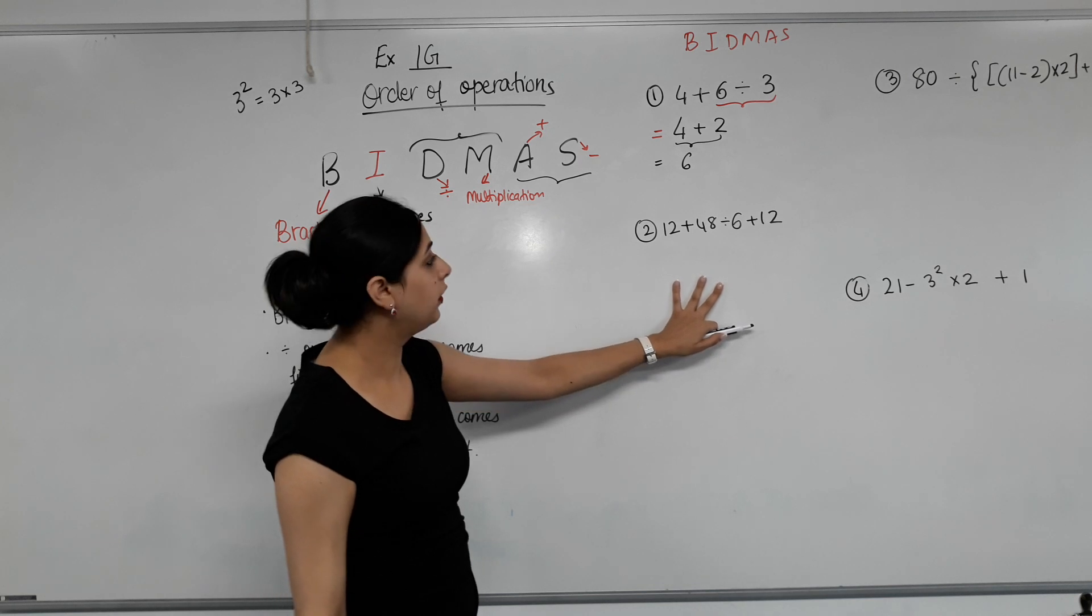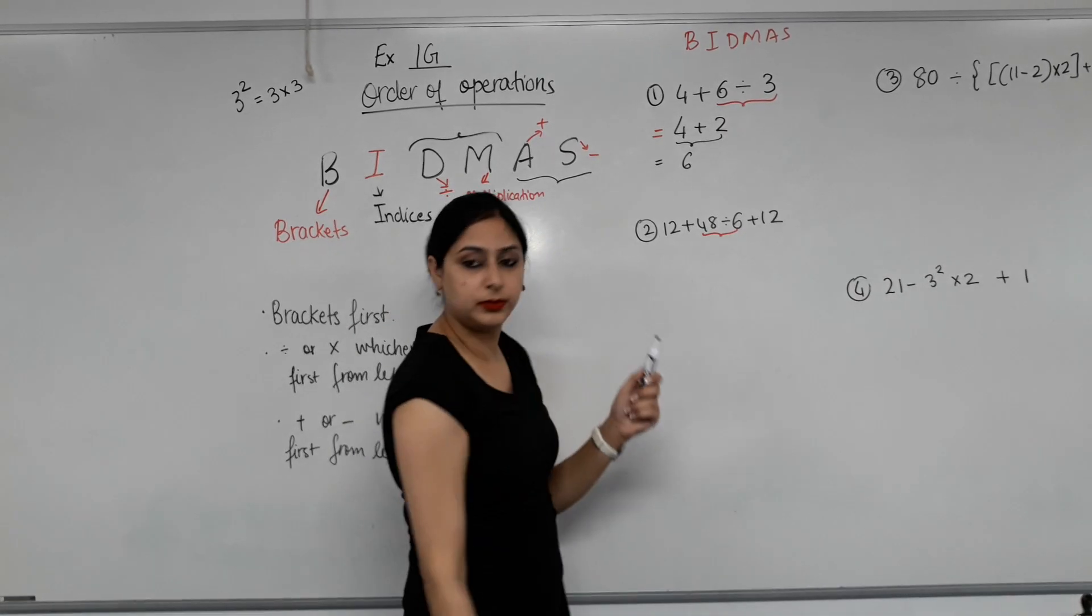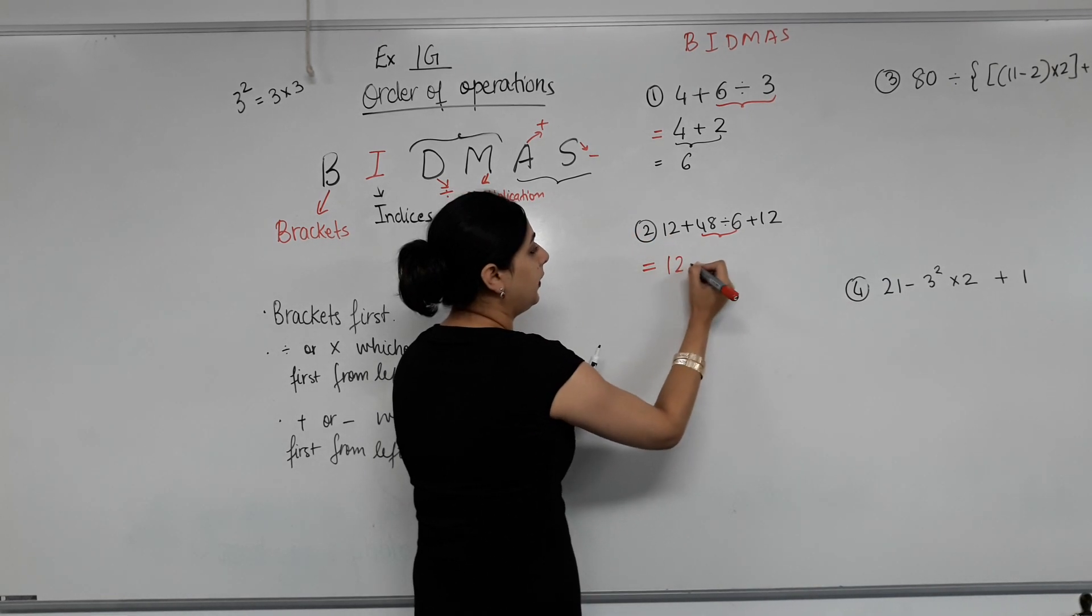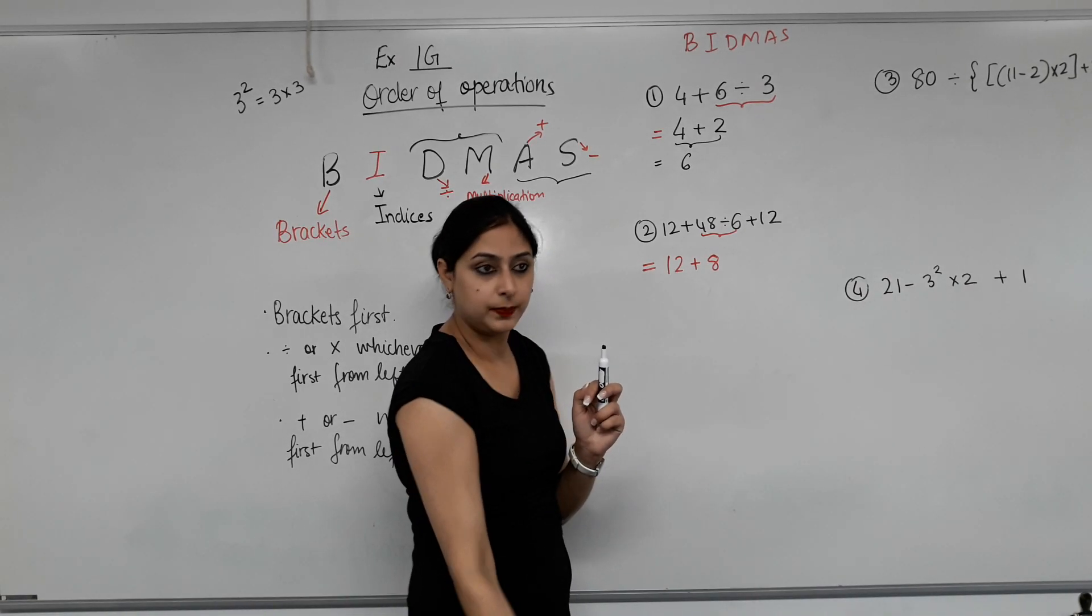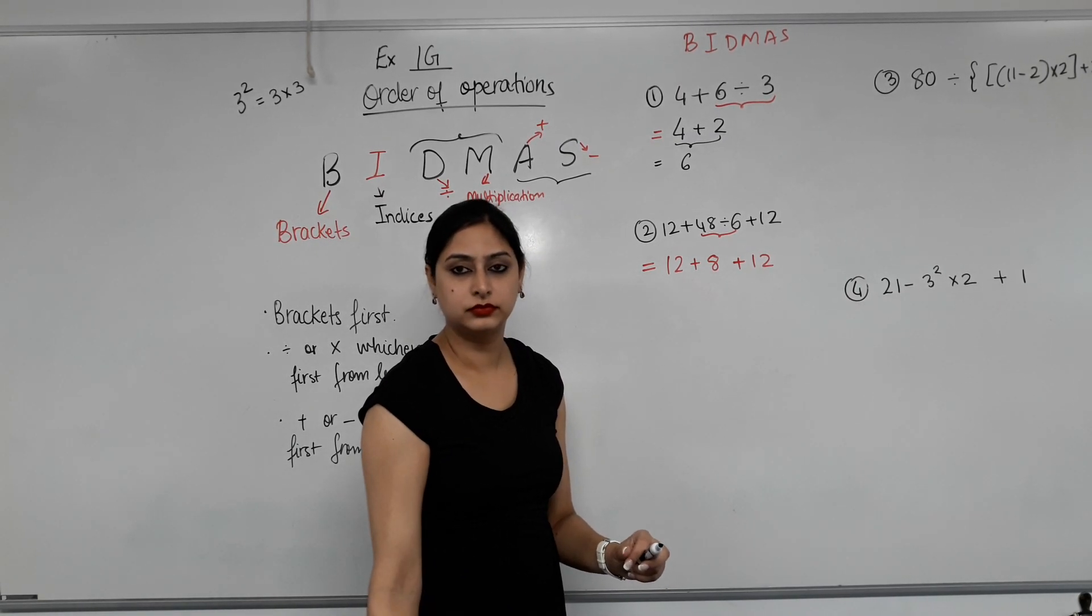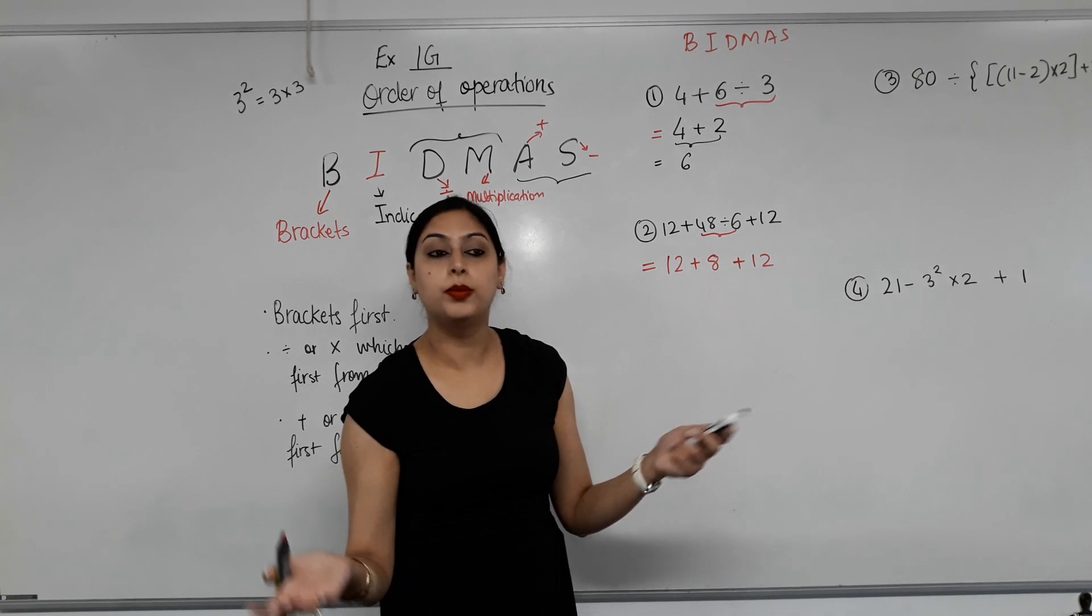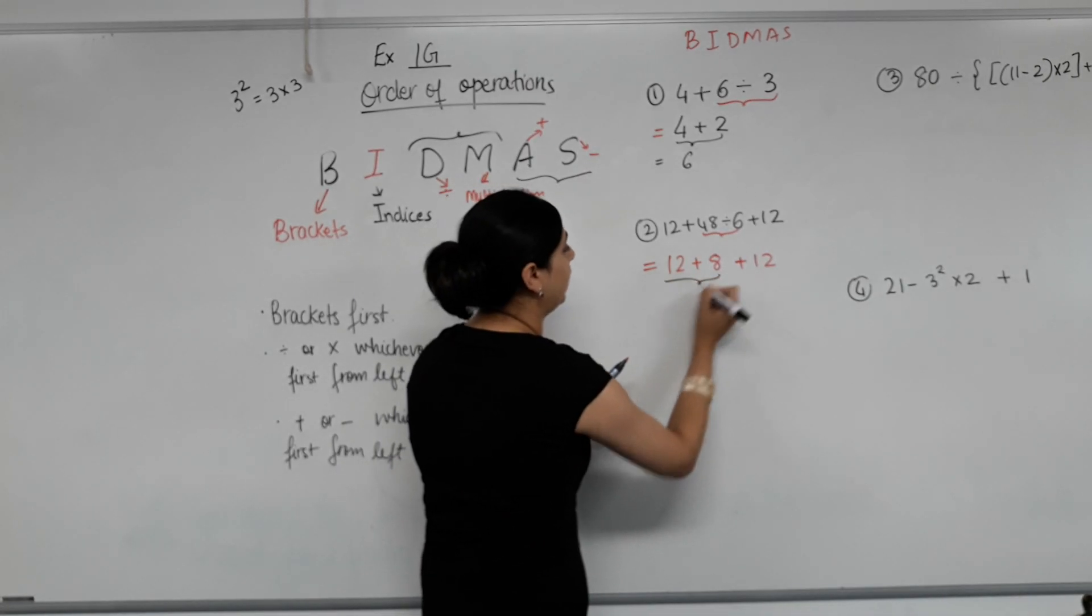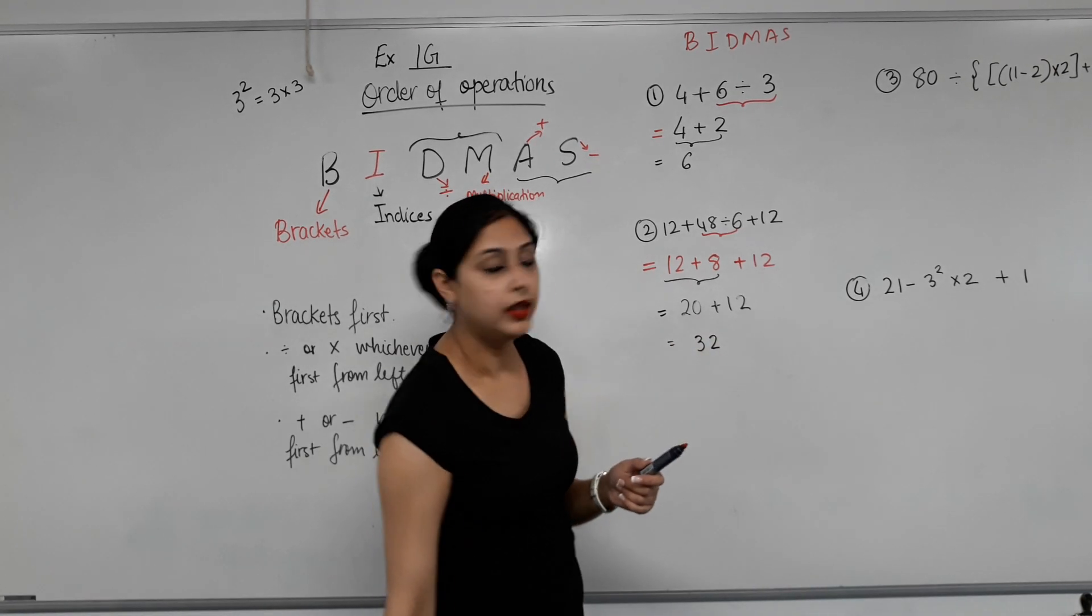Next one. Any brackets? No. Then what's the next step? Indices. Any indices? No. Division or multiplication? Yes. So don't we have 48 divided by 6? Yes. What do I put here? 12. Equal sign. And then I'll copy as it is. So 12 plus, what's 48 divided by 6? 8. Can I replace 48 divided by 6 by 8? No. And then copy everything else as it is. Now, which addition do I do first? The first one, the 12 plus 8. Well, in this case it doesn't matter because does order matter in addition? No. But if it was subtraction, then that would affect. But to always get the right answer, make sure you stick from the left to right rule. So let's do the left to right first. 12 plus 8? 20. Plus the 12? 32. Make sense? Yes. Okay.